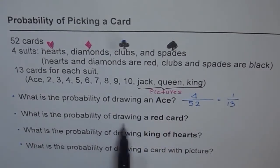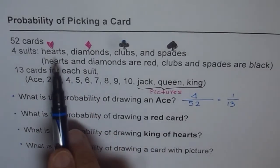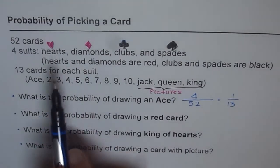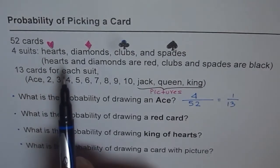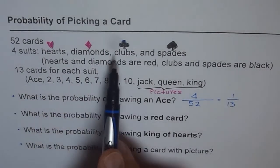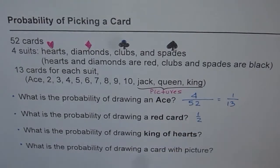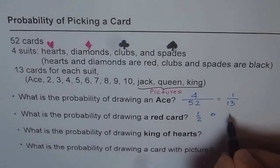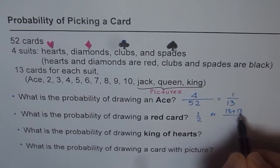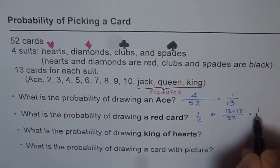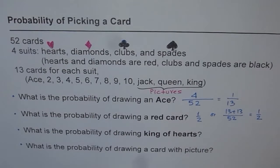The second question: what is the probability of drawing a red card? There are two types of red cards — hearts and diamonds, 13 of each, making 26 red cards total. Half the cards are red and half are black, so the probability is 1/2. You can write it as 13 plus 13 over 52, which gives you one half.